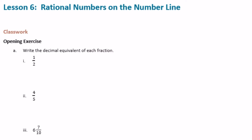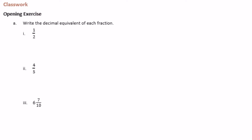6th grade module 3 lesson 6 classwork: write the decimal equivalent of each fraction. This is a review from 5th and 6th grade. For 1 half, we make the denominator 10 — 1 times 5 over 2 times 5 gives us 5 tenths, so that's equal to 0.5.